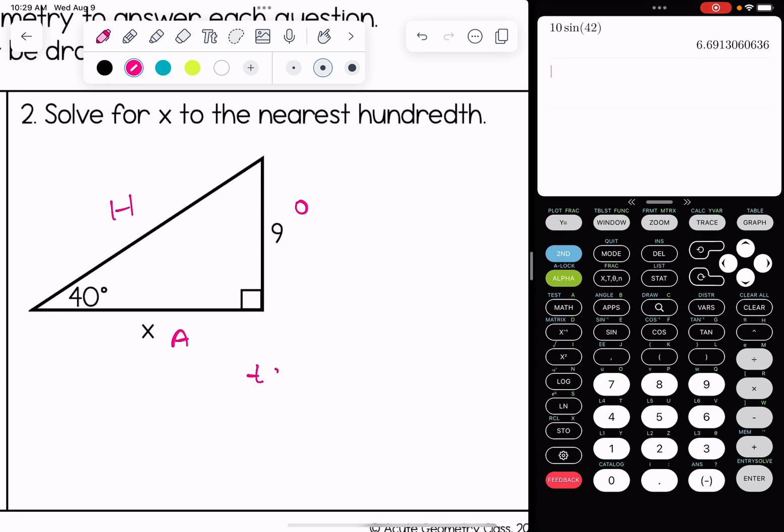So tangent of 40 is equal to 9 over x. If you think about SOHCAHTOA, TOA has opposite and adjacent involved.